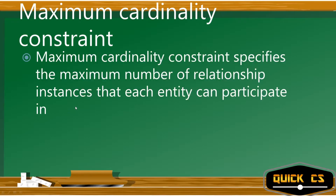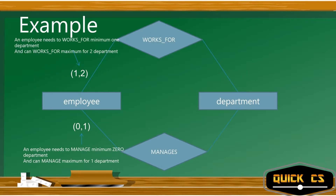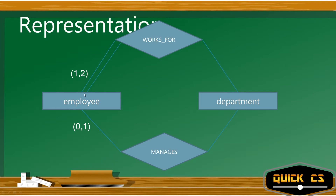The maximum cardinality constraint specifies the maximum number of relationship instances each entity can participate in. For example, a maximum of one employee can work for two departments, and one employee can manage at most one department — not more than one. That is what maximum cardinality means.